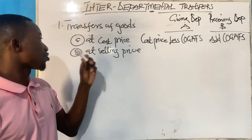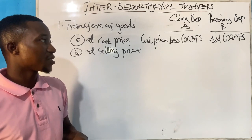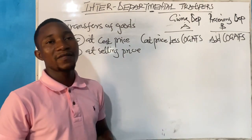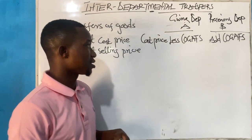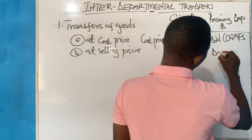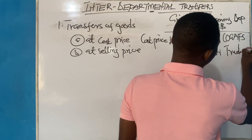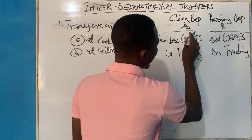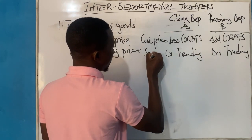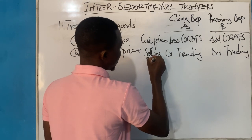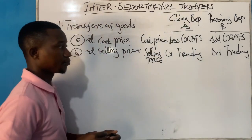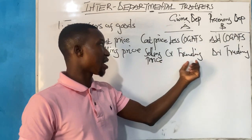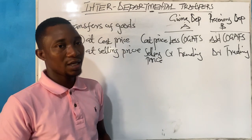When goods are transferred at selling price, the accounting treatment is that you debit the trading account of the receiving department and credit the trading account of the giving department. Debiting here means we are subtracting or lessening from the giving department.